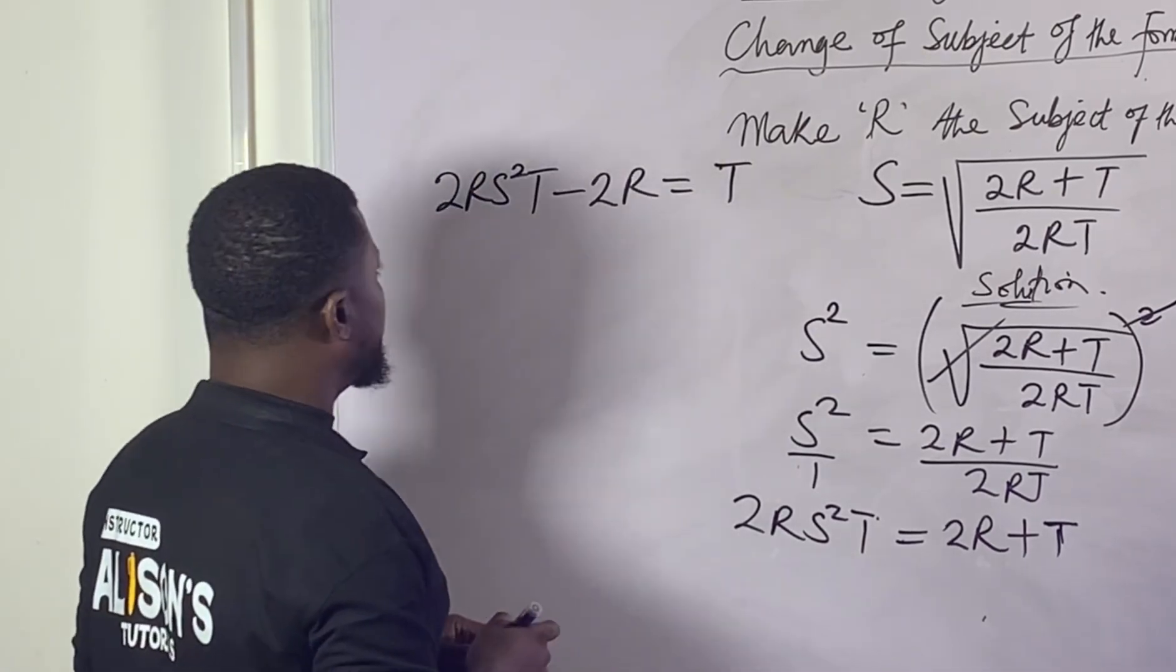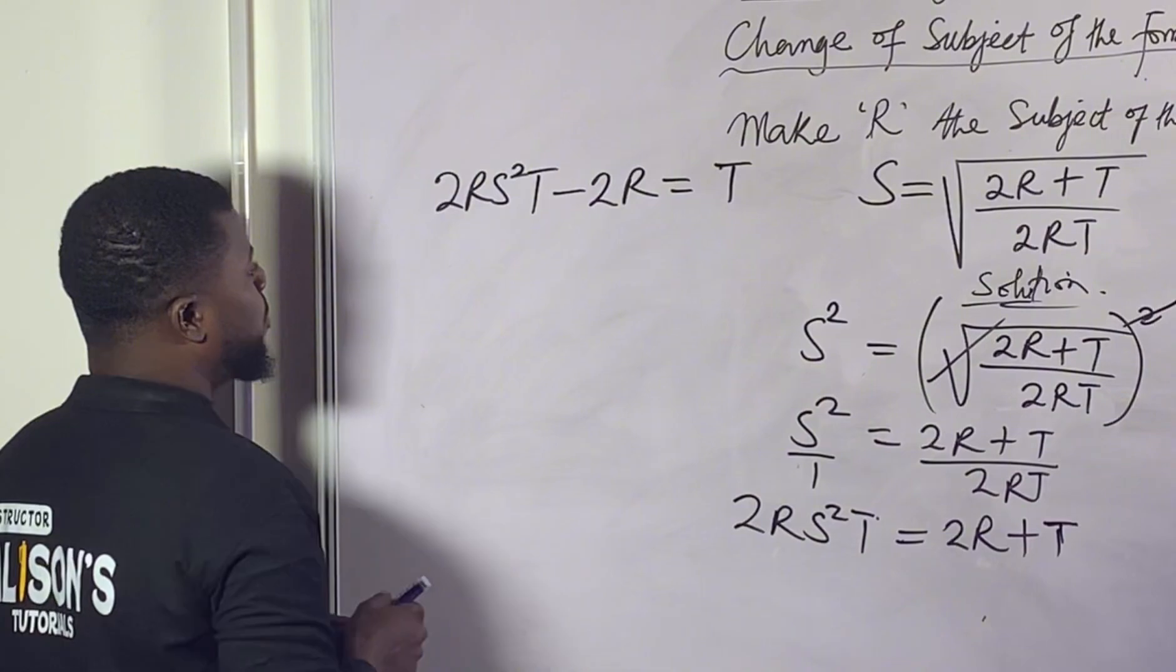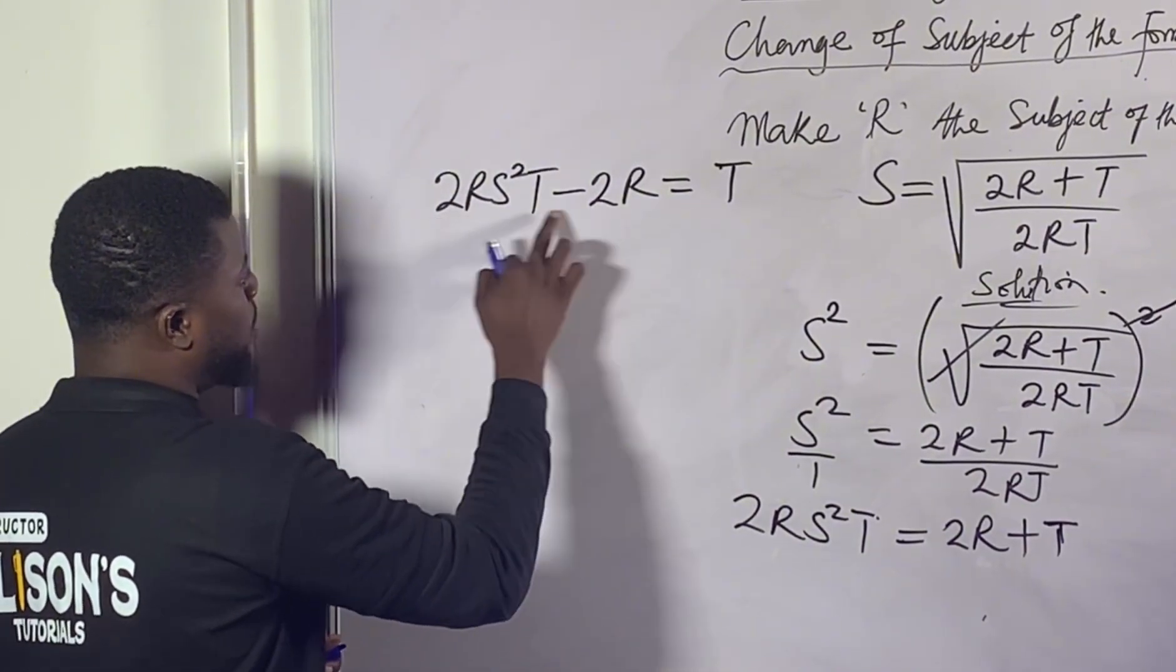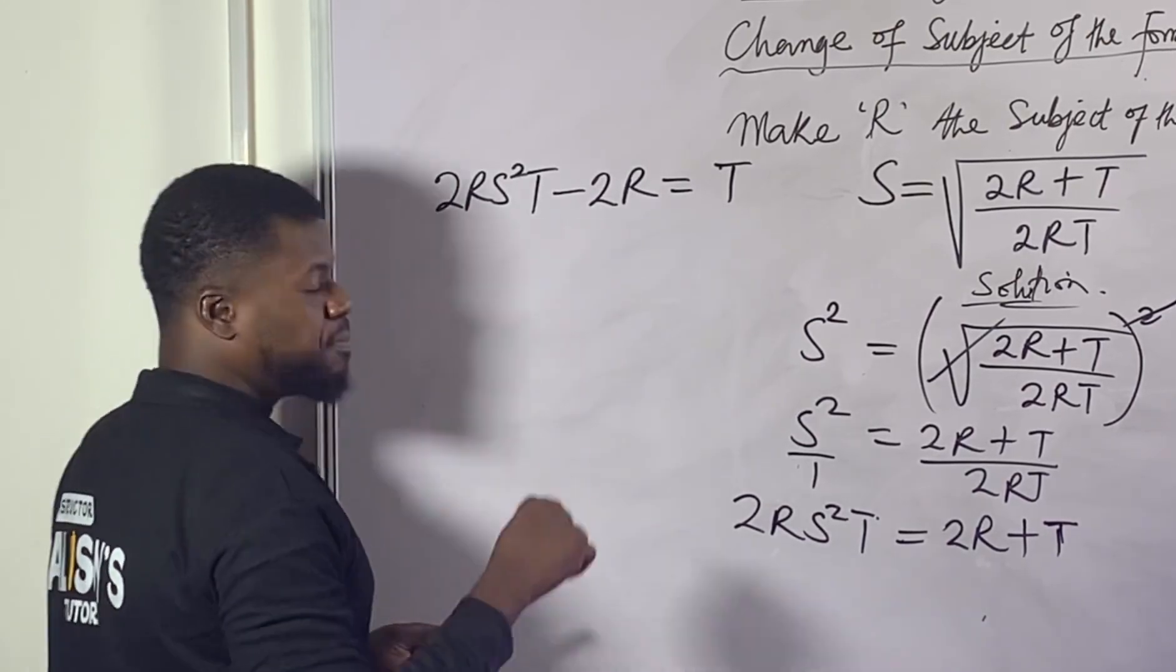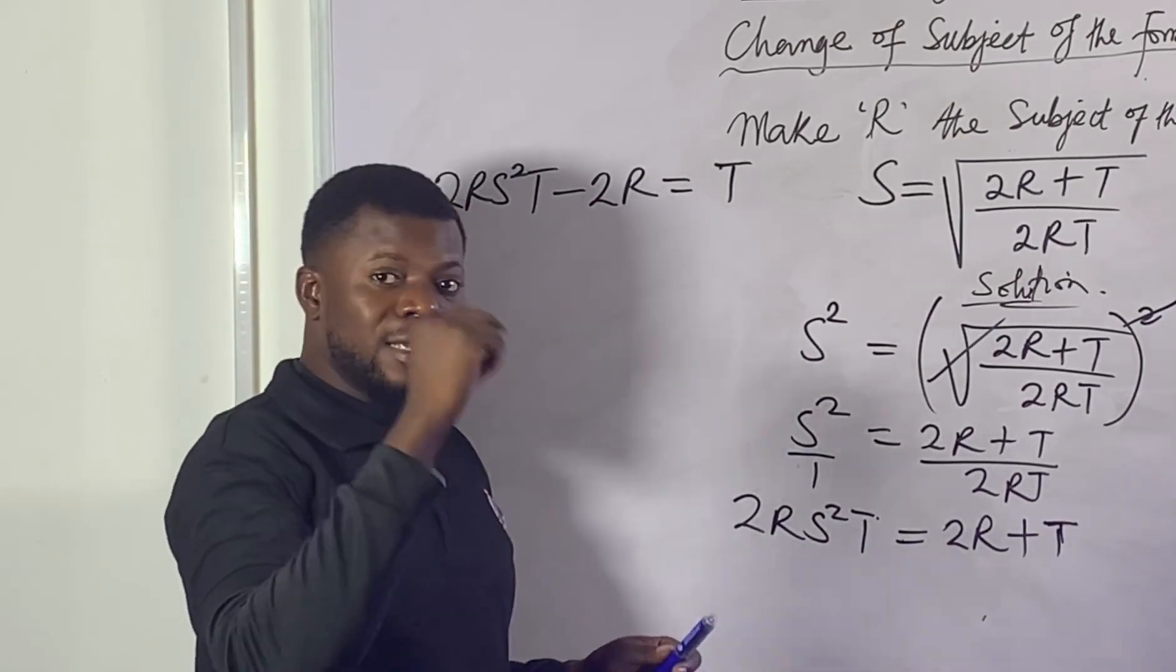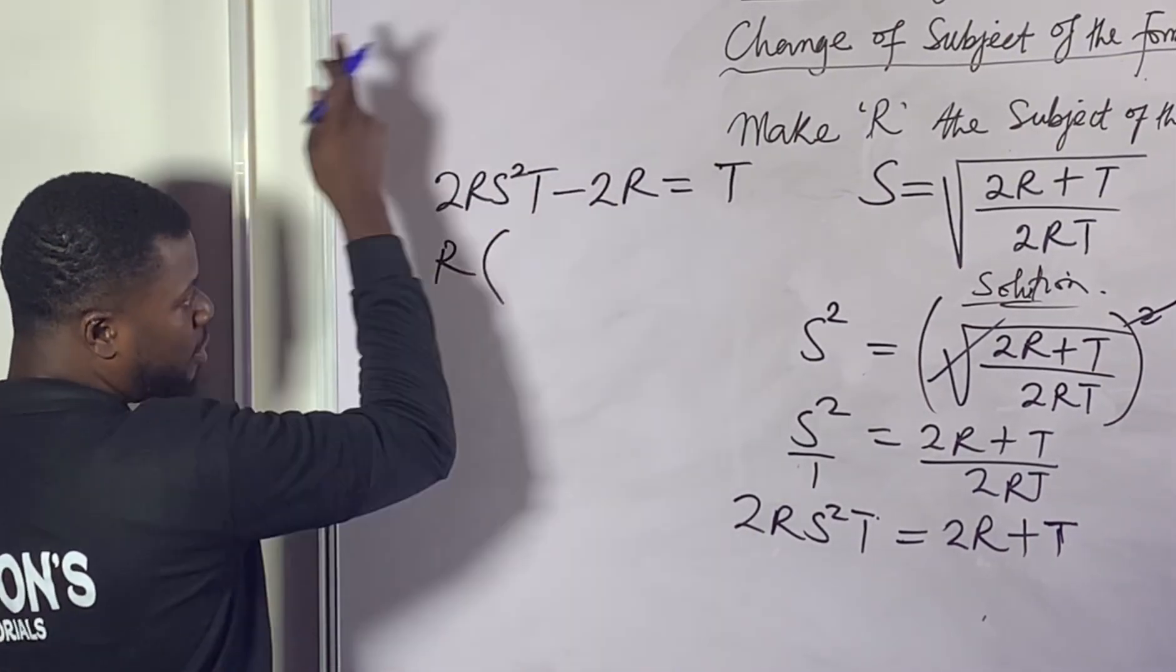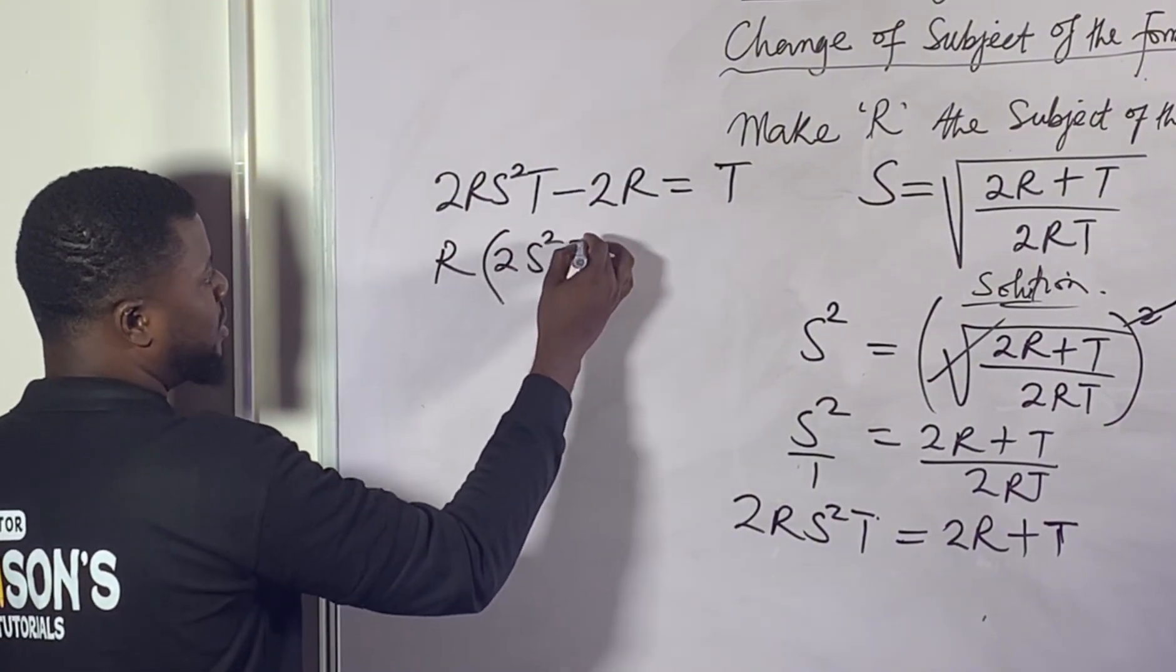The last thing you need to do at this point is that you notice that we have R on both sides. Can we factor out R? Not only R, we also have 2 common to both sides, but we're not interested in the 2. We are specifically interested in R. So what do we need to do? Factor out the R. If I pull out R from this point, what will be left is 2S²T. And if I also pull out R here, we'll be having negative 2 left.